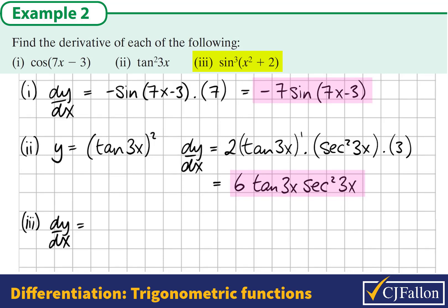The derivative of the outside: multiply by the power 3 and reduce the power by 1, so it becomes 3 times sine of the angle all to be squared. Then the derivative of the middle layer, so sine goes to cosine, becomes cosine of the angle. Finally, the derivative of the angle x squared plus 2 is 2x.